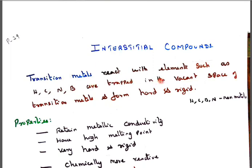So they are trapped in the vacant space of transition metals and form a hole and rigidity. So this hydrogen, boron, carbon, nitrogen are non-metals.